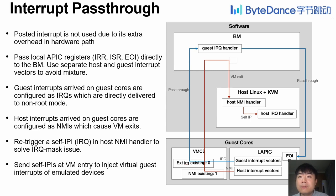The first technique is interrupt pass-through. We do not use posted interrupts. Instead, we pass physical local APIC registers, including IRR, ISR, and EOI, directly to the VM, and configure the external interrupt exiting bit in VMCS to deliver guest interrupts directly to non-root mode. However, this configuration will also cause host interrupts to be delivered to non-root mode. To prevent this, we configure host interrupts arriving at the guest core as NMI, and thus a VM exit is triggered for them.